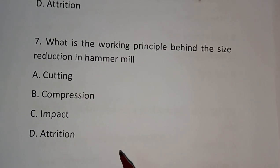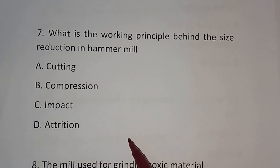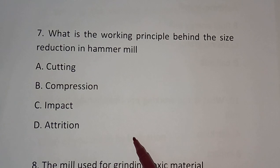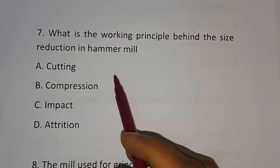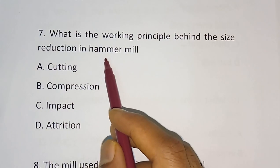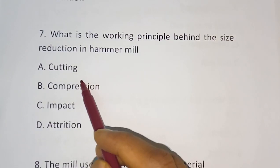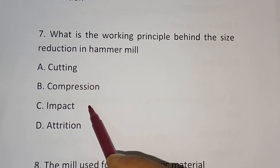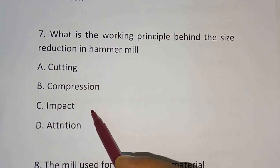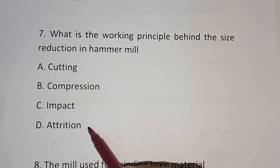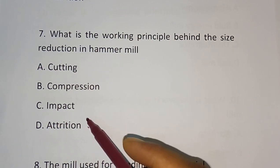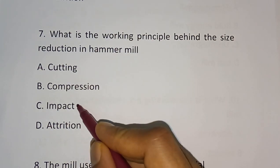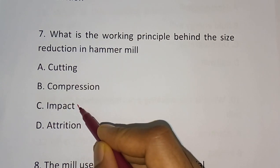Question number 7: What is the working principle behind the size reduction in hammer mill? Options are: cutting, compression, impact, attrition. The correct answer is impact.